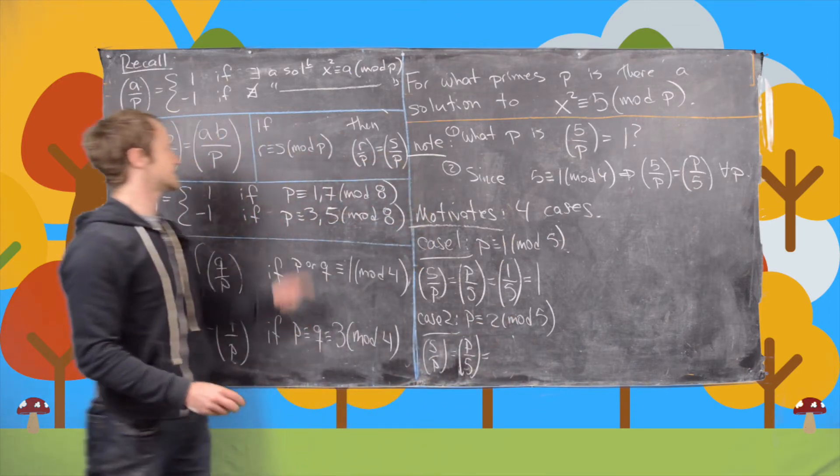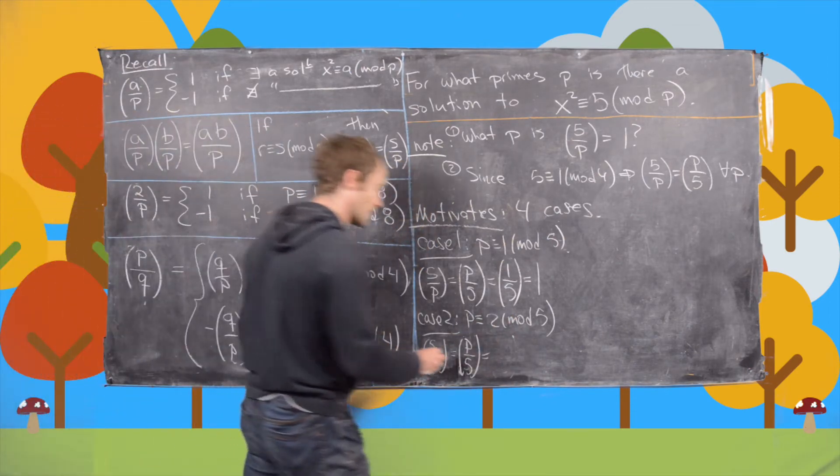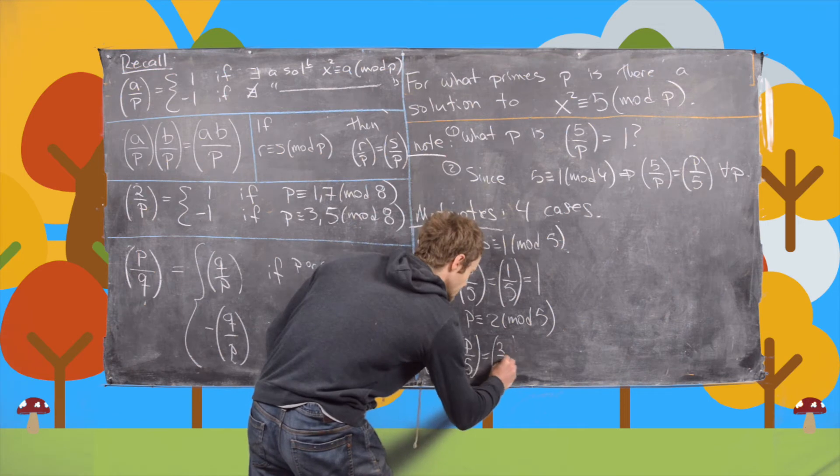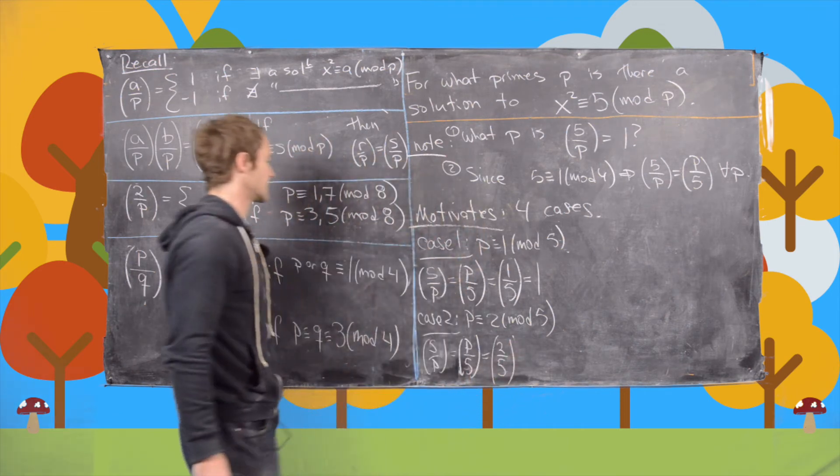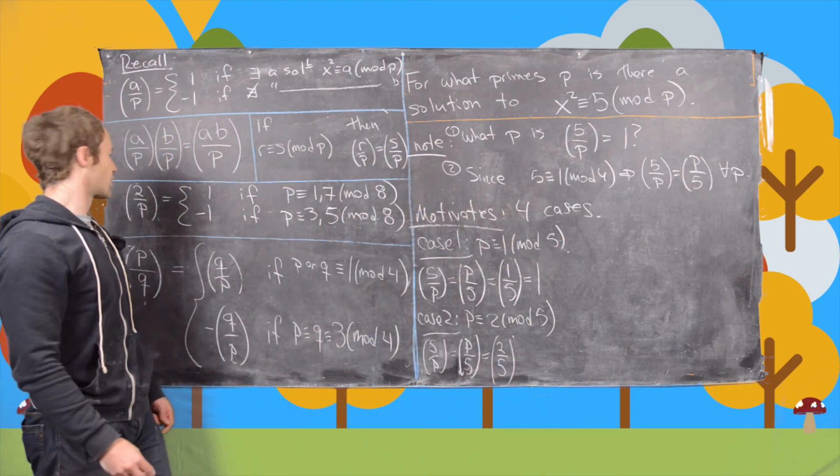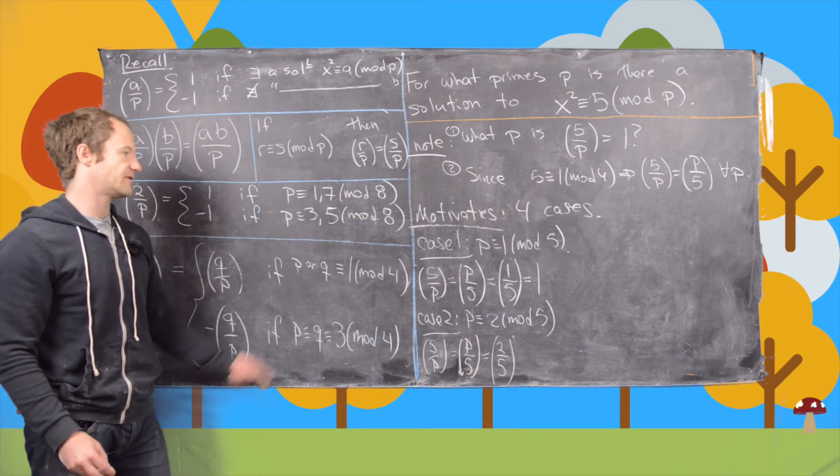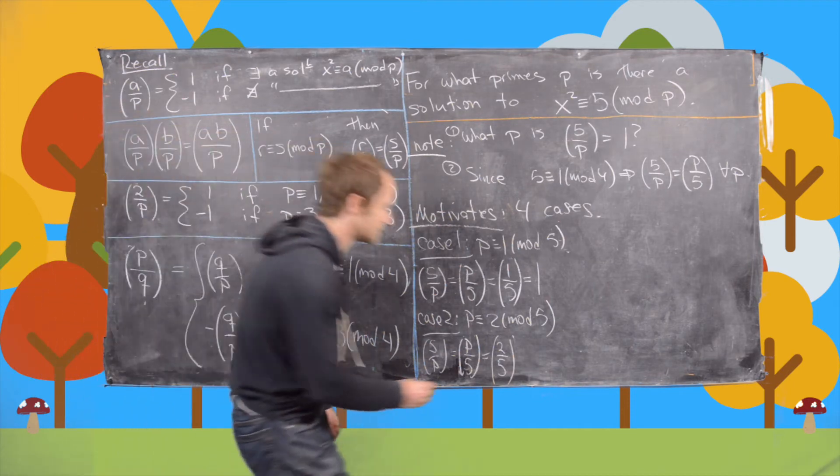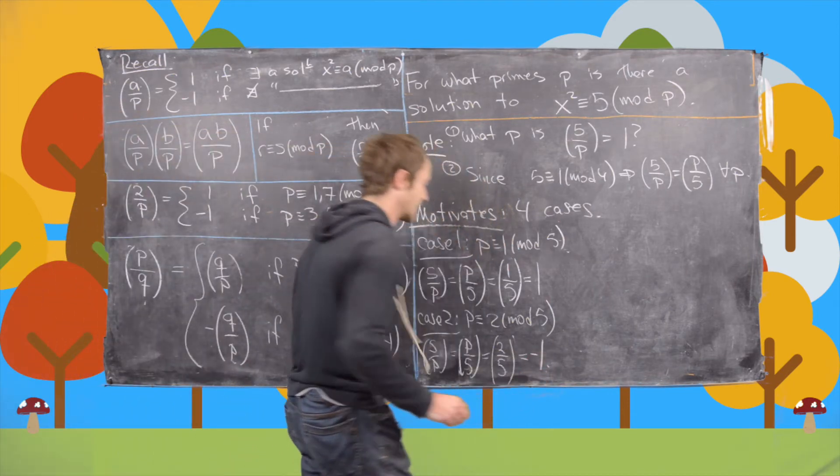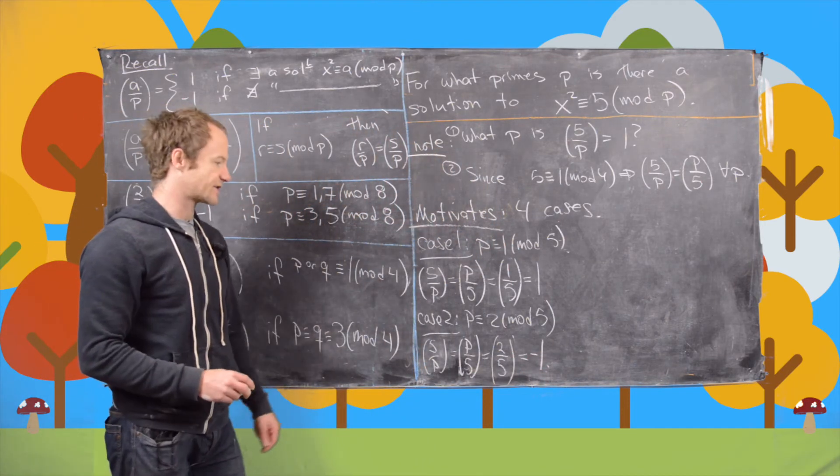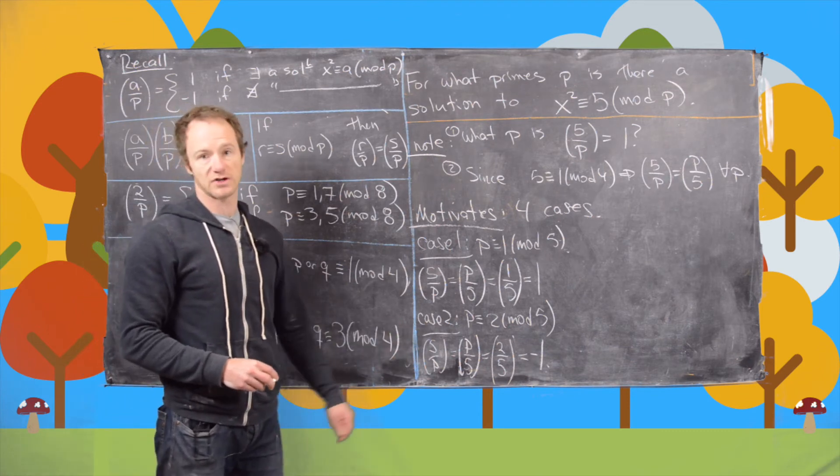And then by this equivalence and this property right here, we have that's the same thing as 2 by 5. But now 5 is a prime of the form 5 mod 8. In fact, it's 8 times 0 plus 5. So that tells us that this is negative 1. So that means the answer here is it's not a quadratic residue.